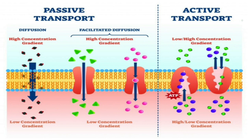This slide shows the difference between passive transport and active transport. In passive transport, diffusion takes place along the concentration gradient — from a region of higher concentration to a region of lower concentration. In active transport, it takes place against the concentration gradient. In passive transport, mainly in facilitated diffusion, it takes place with the help of carrier molecules. Active transport also uses carrier molecules, but here hydrolysis of ATP provides the energy for the process.